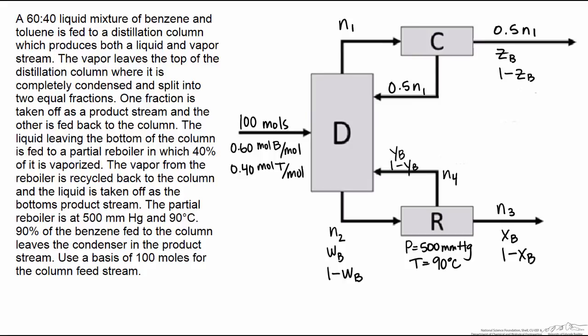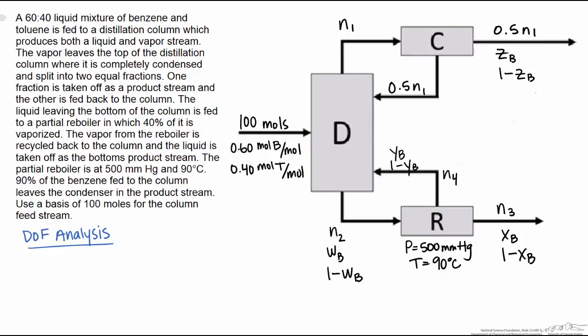The first thing that we're going to do is do a degree of freedom analysis to see how we can solve this. So first we'll start by looking overall. So overall means that 100 moles that's coming in, and then those two streams, one leaving the condenser and one leaving the reboiler. So if we look at those, we find that we have N1 as an unknown, Z sub B, N3, and X sub B. So we need to find four equations in order to solve for these four unknowns.